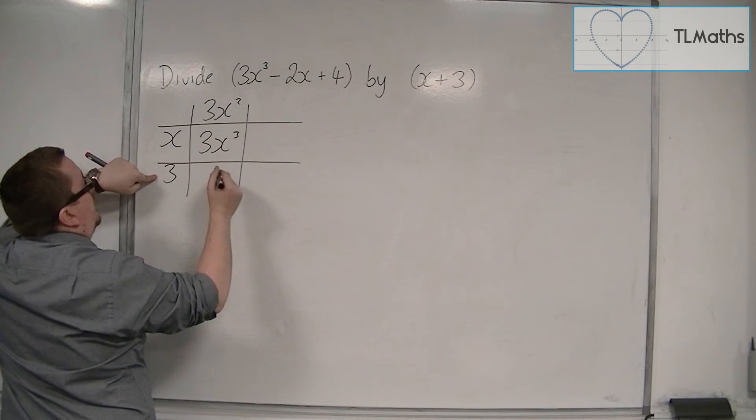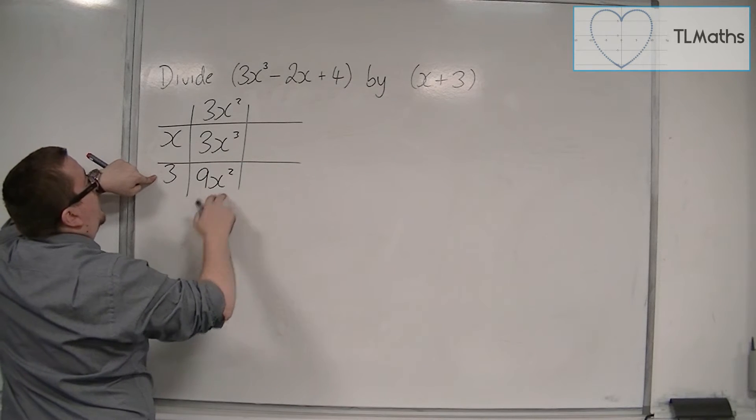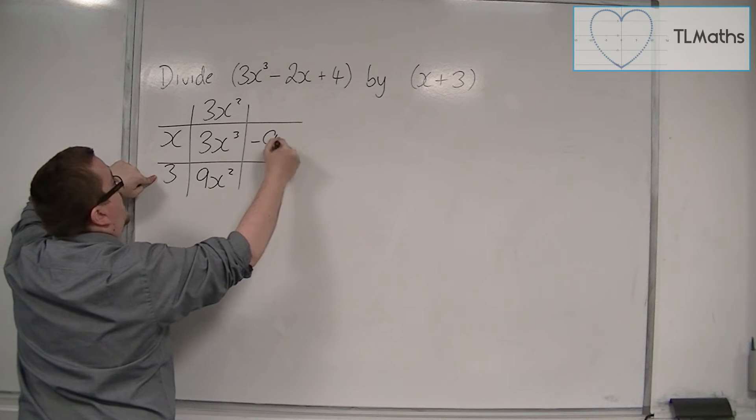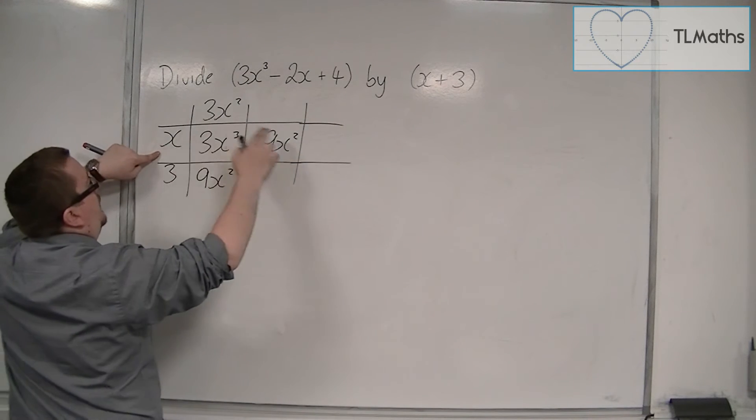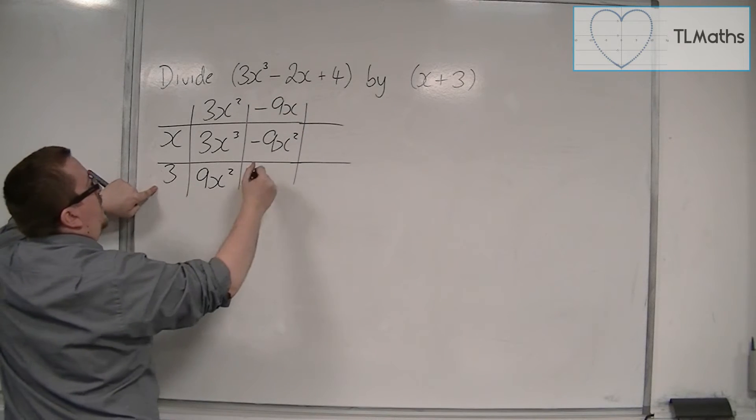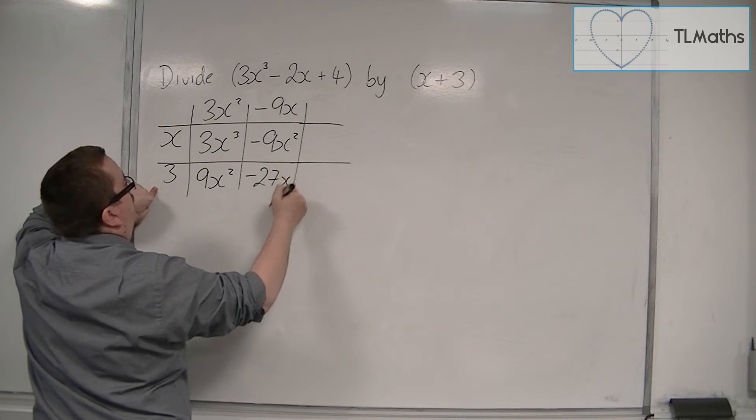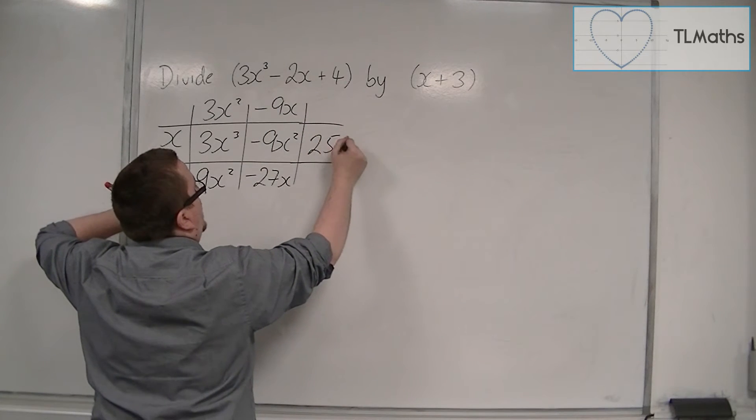So we'd have to multiply x by 3x squared to make 3x cubed. 3x squared times 3 is 9x squared. We don't want 9x squared because there's no x squared there. So we're going to have to take away 9x squared. So x into minus 9x squared is minus 9x. Minus 9x times 3 is minus 27x. I don't want minus 27x, I want minus 2x. I've got to add on another 25x.